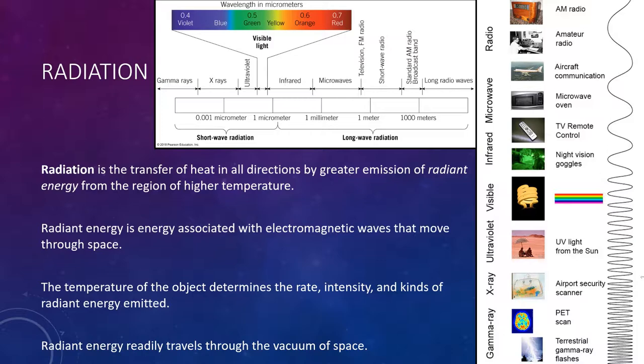19th century physicists were so puzzled by the seemingly impossible phenomenon of energy traveling through the vacuum of space without a medium to transmit it that they assumed a material, which they called an ether, must have existed between the Sun and Earth. You know that visible light is emitted if an object is heated to a certain temperature. A heating element on an electric stove, for example, will glow with a reddish orange light at the highest setting, but produces no visible light at lower temperatures, although you can feel the warmth of your hand held near.